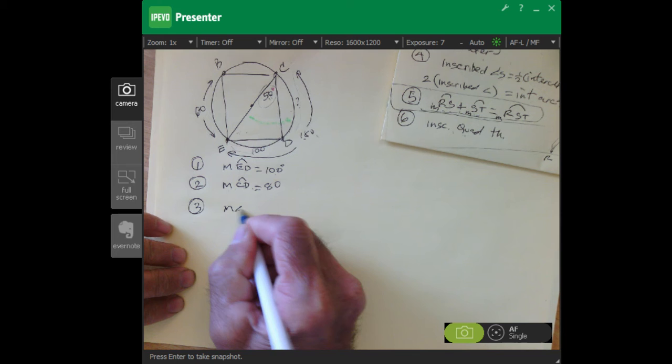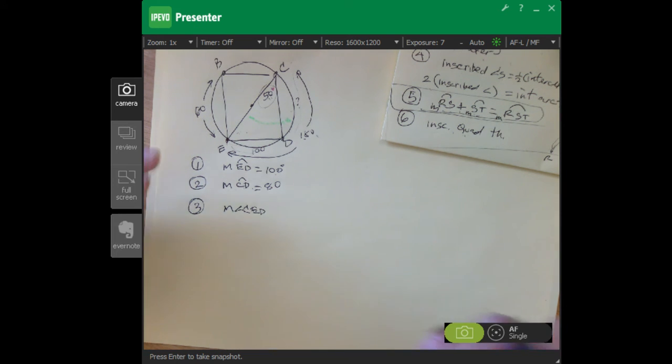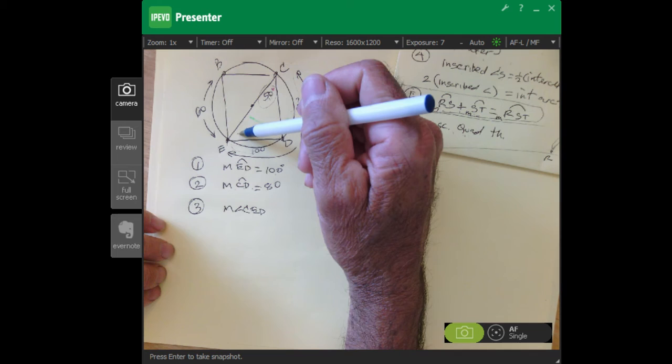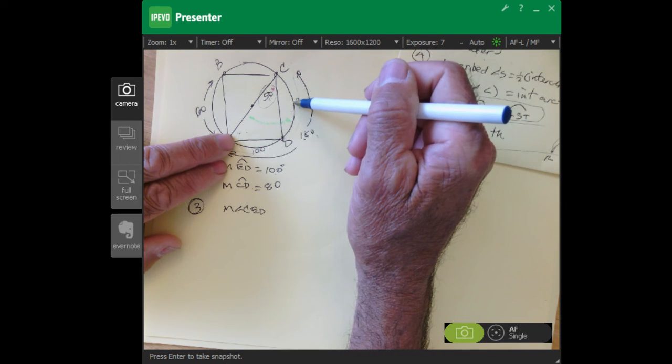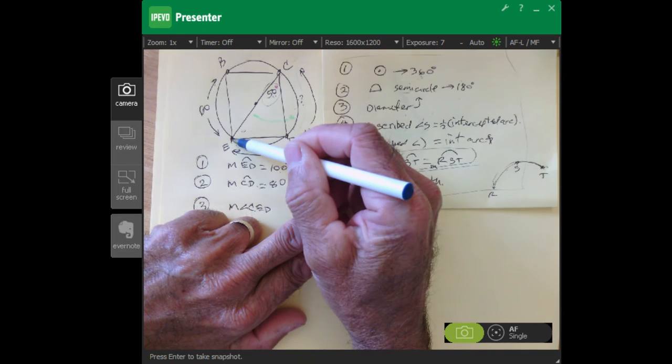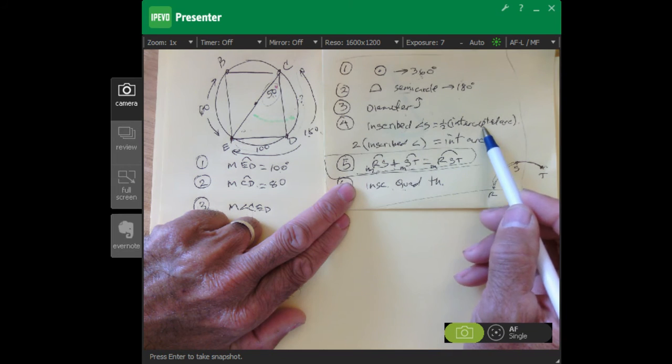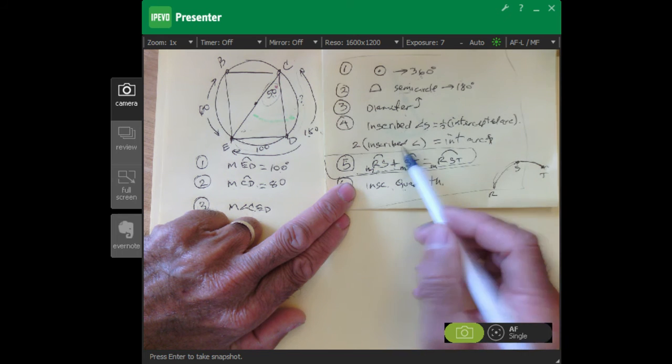Now the third question is going to be: what's the measure of angle CED? In order to find this, we need that arc. It comes down to the relationship between the inscribed angle. That's an inscribed angle, so if we can find the measure of the arc that it's associated with, we should be able to use one of these two relationships to figure it out.